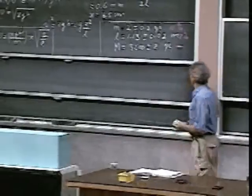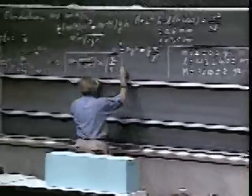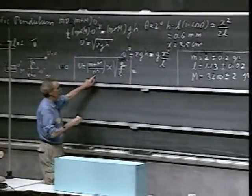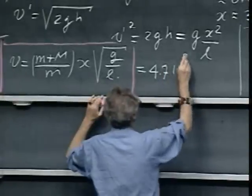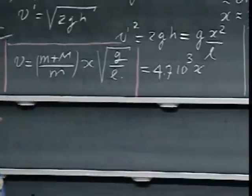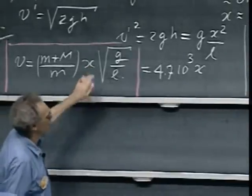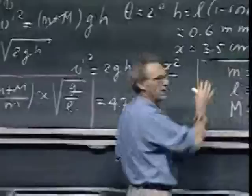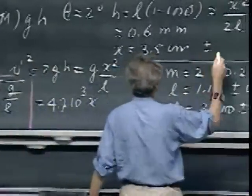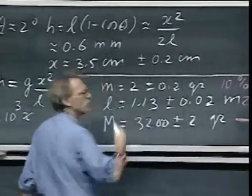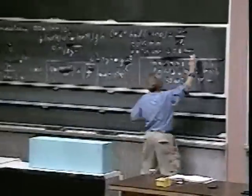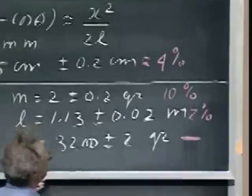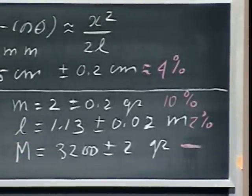With those numbers, I can calculate (m + M) over m and the square root of g over L, and I find the coefficient 4.7 times 10 to the third times x. We still have to measure x, which may be 3.5 to 5 centimeters. The uncertainty in our measurement will probably be about 0.2 centimeters — about 4%. Combining all uncertainties, we get the final bullet speed to an accuracy of about 15%.